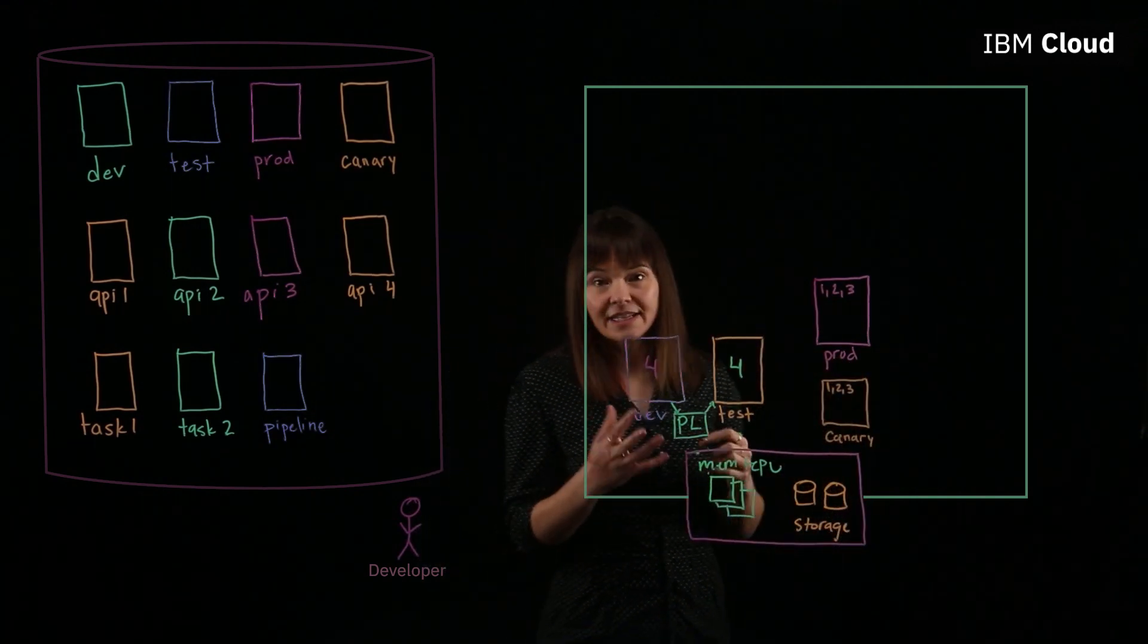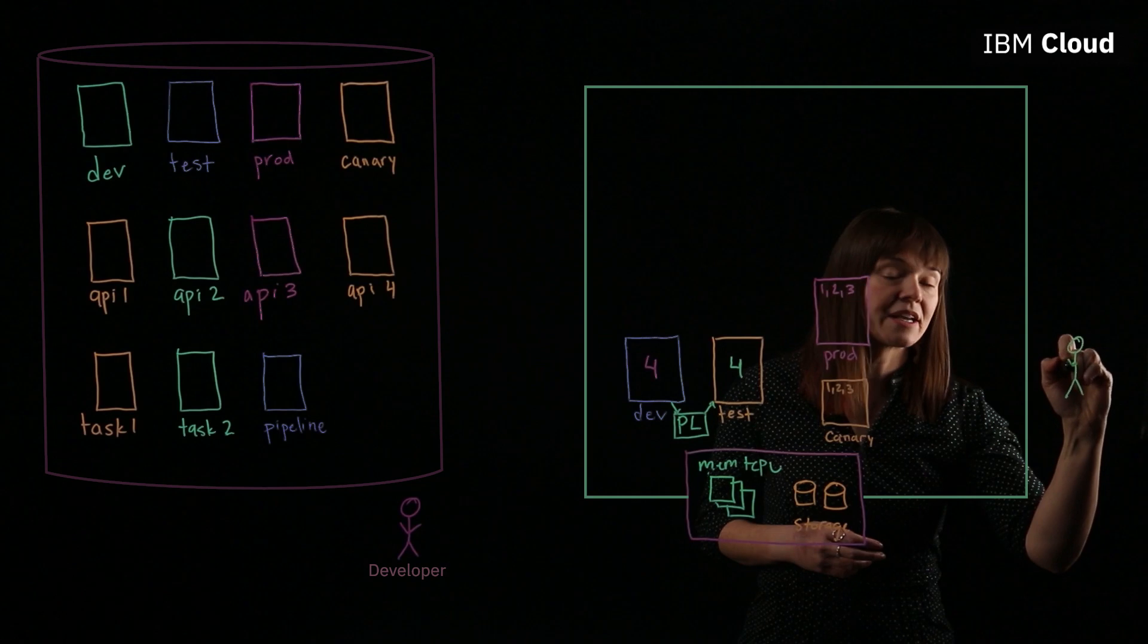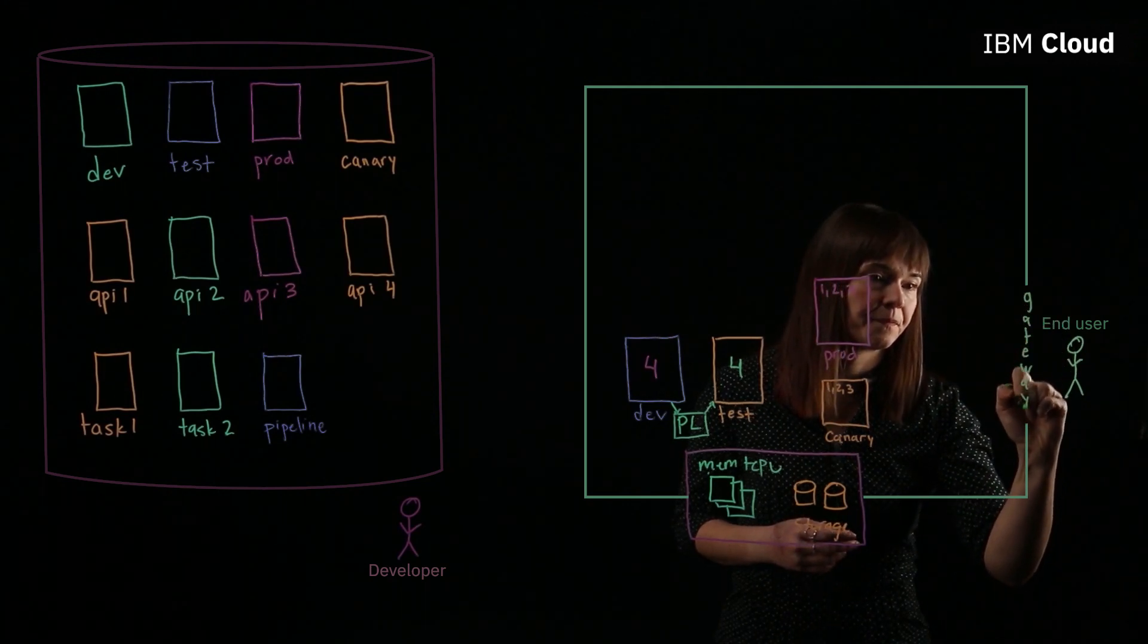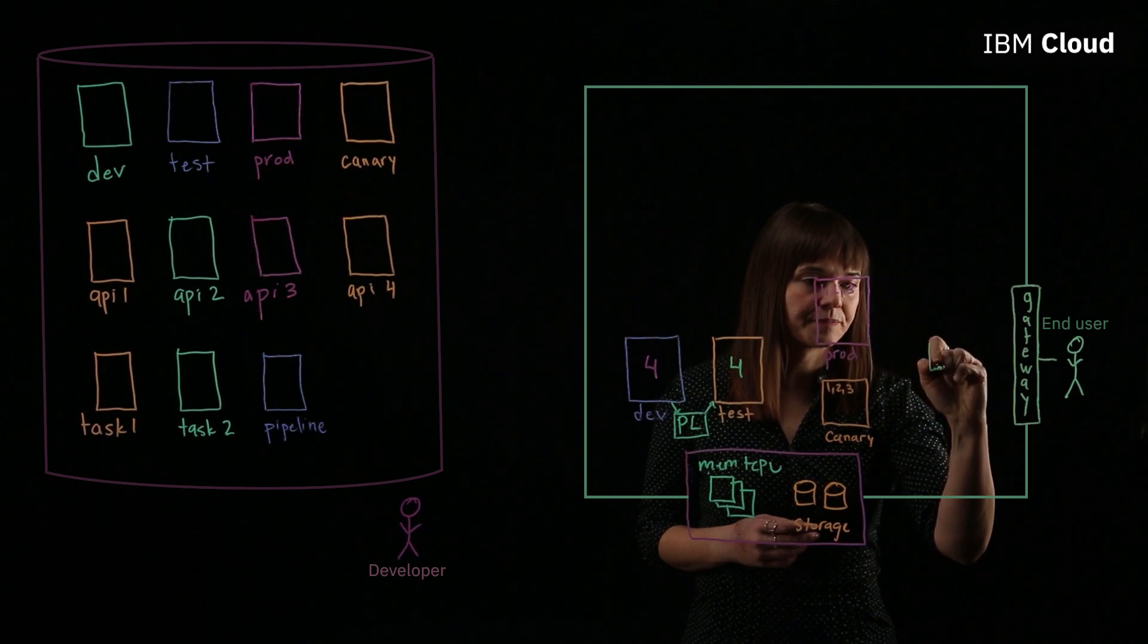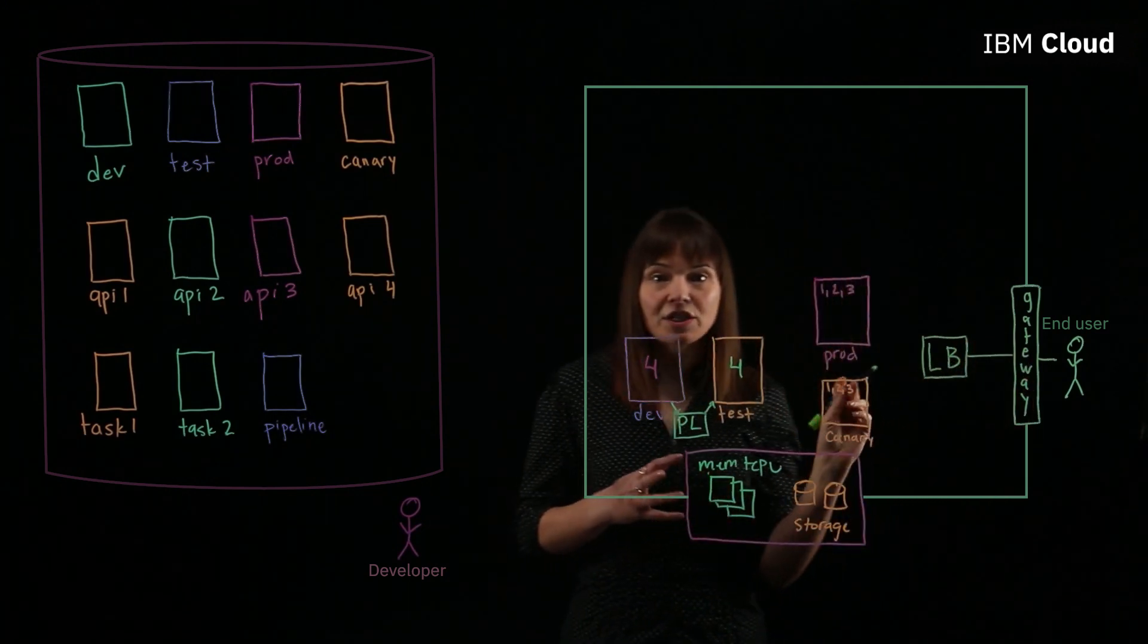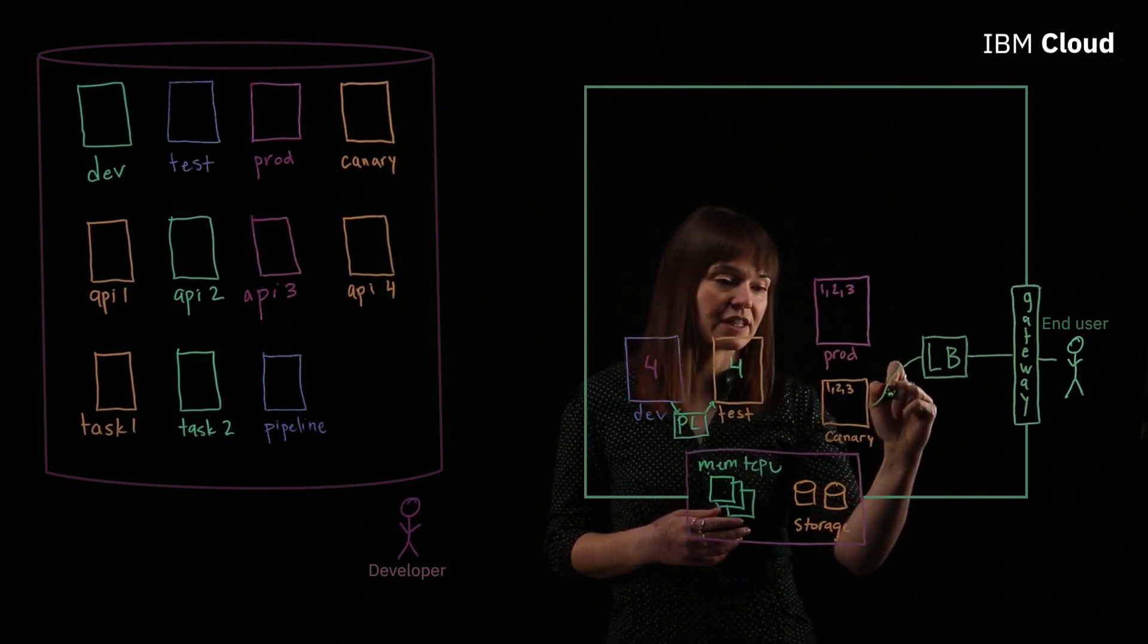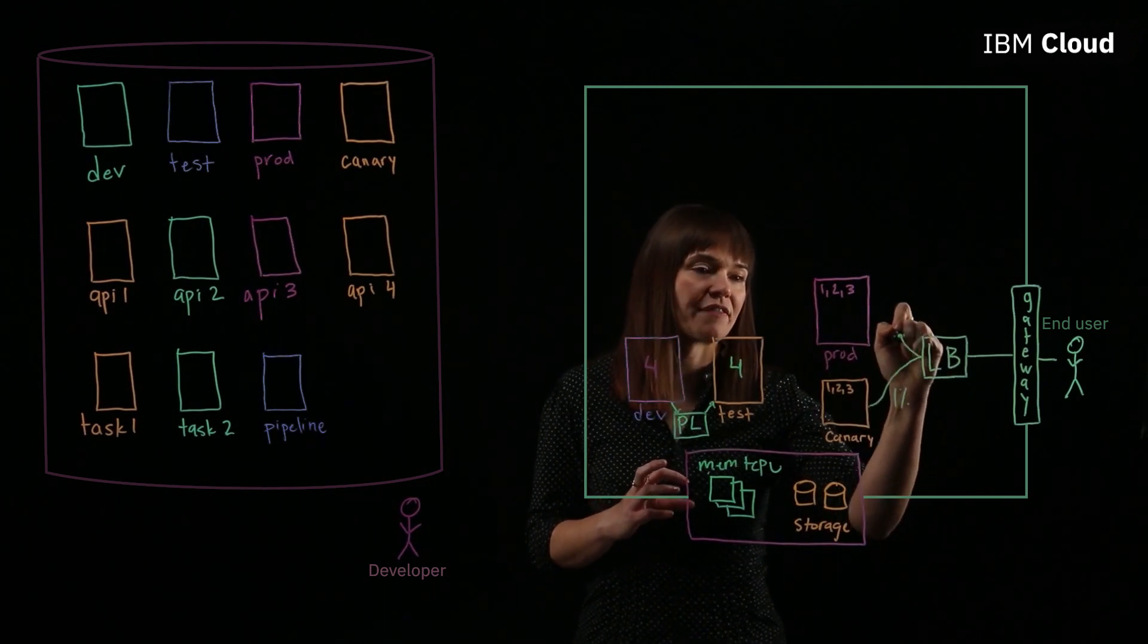So what we can do here, let's consider our end user. Our end user wants to make a call into our cluster. That call is going to go through a gateway to get into the cluster, and then that gateway is going to send the traffic to a load balancer. The load balancer is going to divide where the traffic goes between prod and canary. So for a canary environment, it might route, say, 1% of traffic to the canary environment. It could be any number you choose, but it's going to be a small percentage, and then the rest of the traffic will go into production.